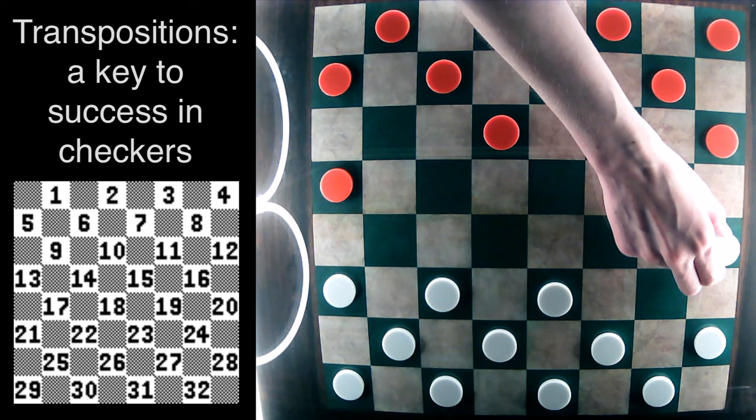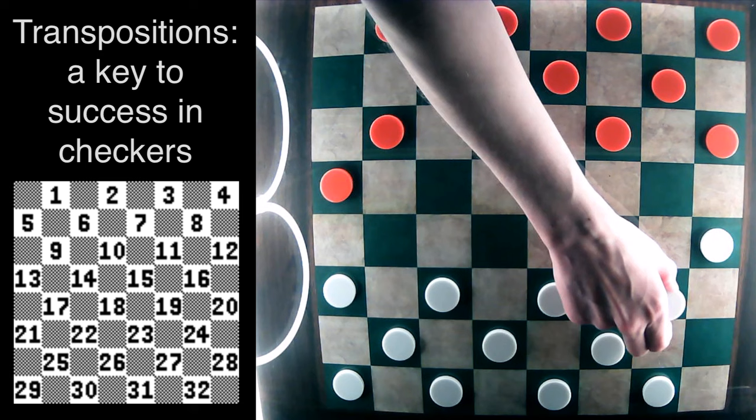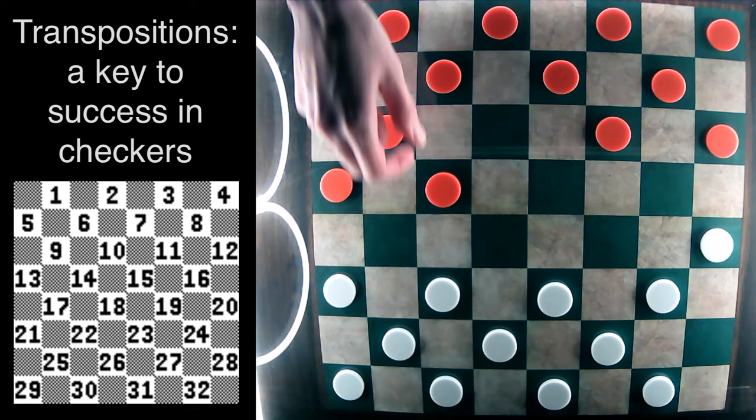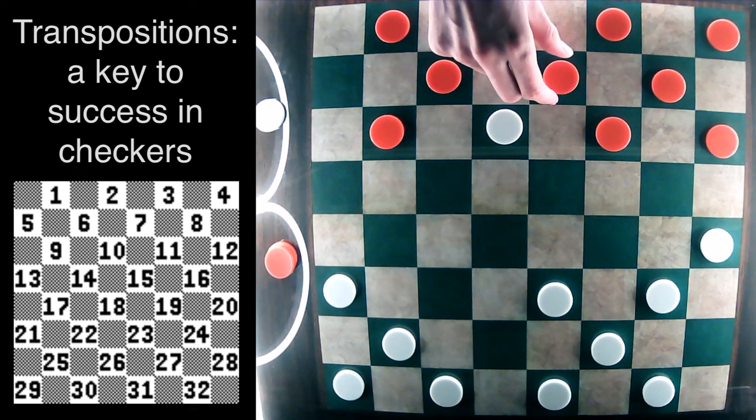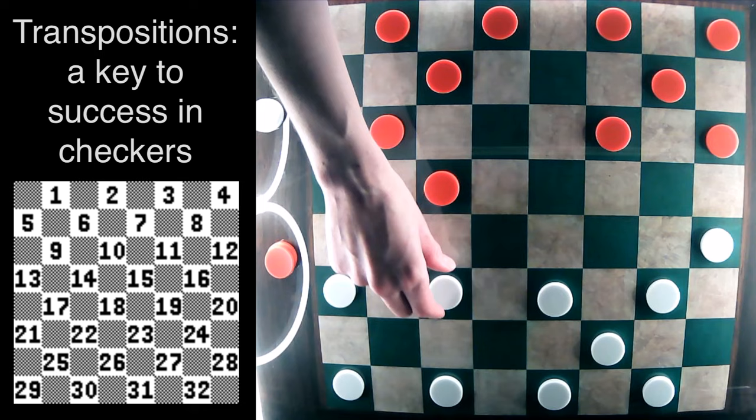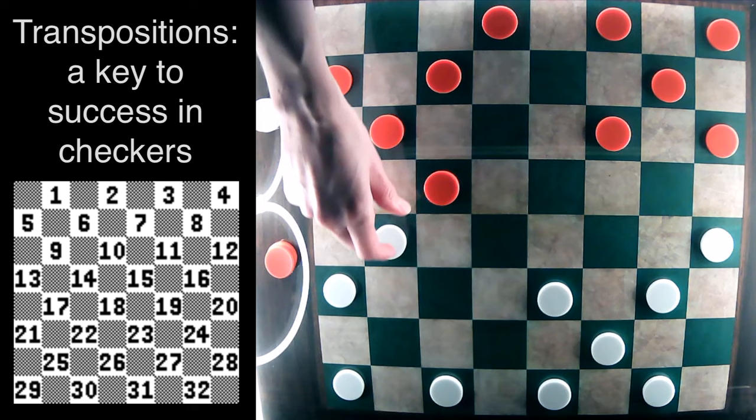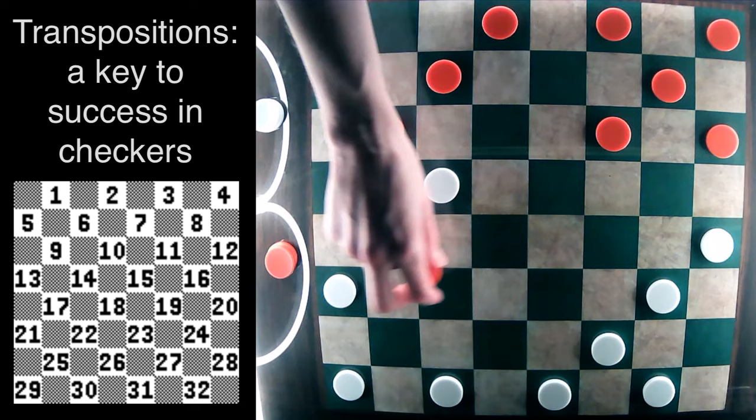9-13, 24-20, 5-9, 28-24, 10-14, 22-17. The double capture. 7-14, 25-22, 1-5, I'm sure this is starting to look very familiar to many of you.